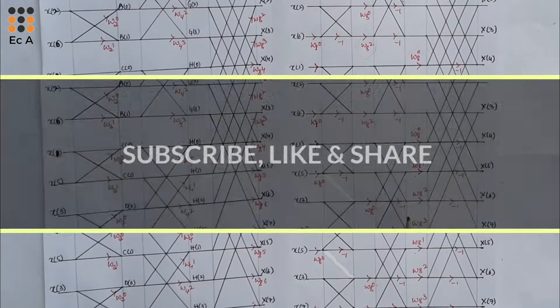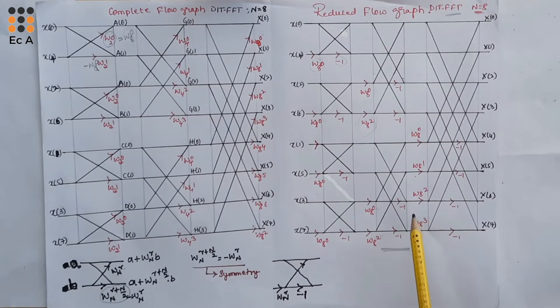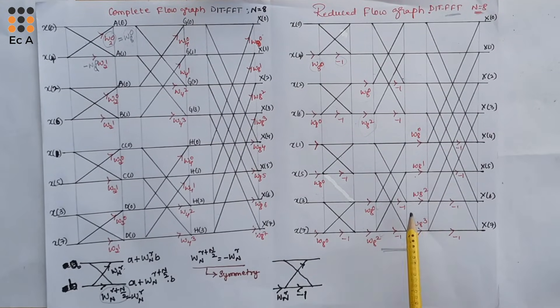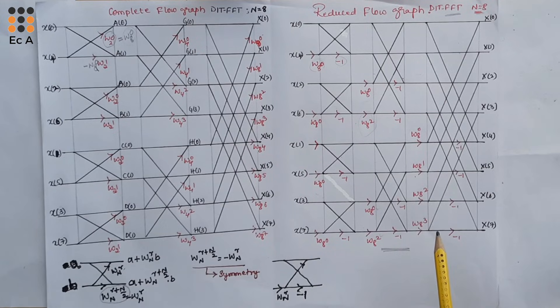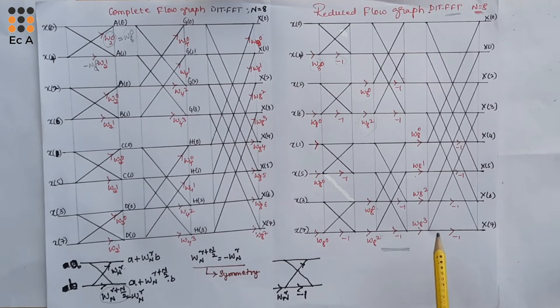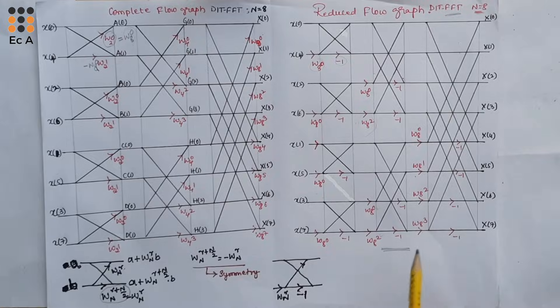This is about the radix-2 DIT FFT algorithm for N equal to 8. Hope you have understood the topic. Thank you.